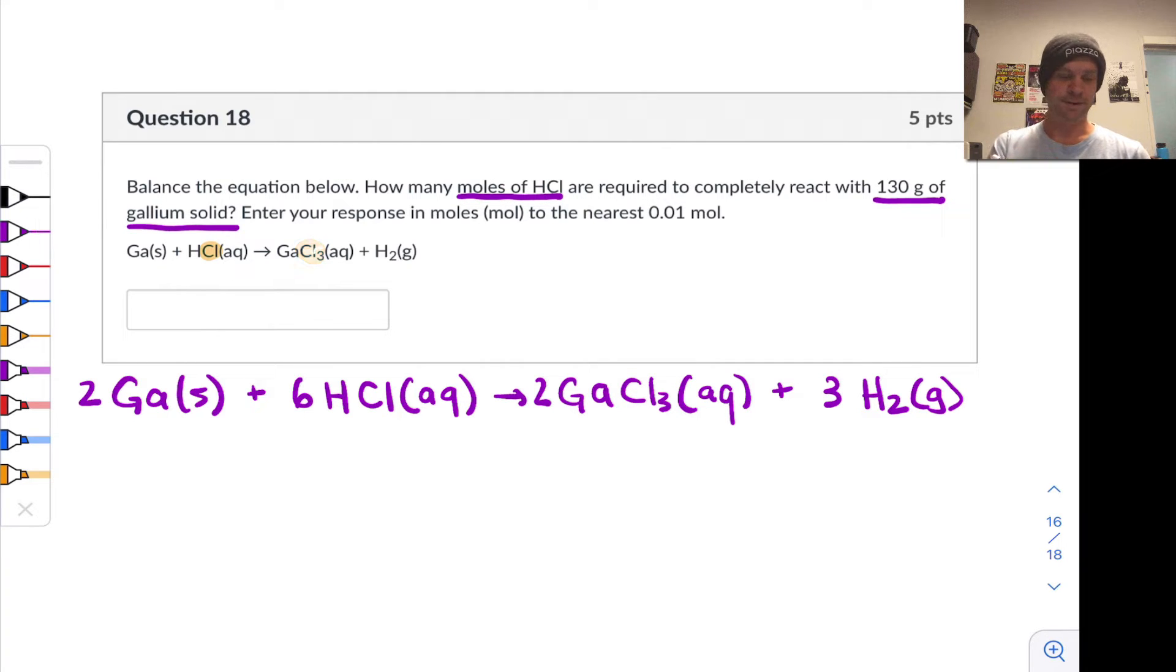So we're all balanced up now and ready to proceed to working with the actual stoichiometry. So we've got 130 grams of gallium solid. Let's map this out to figure out what we know and where we're going. We've got a mass of Ga that we're going to use as a reactant. What we want to know, ultimately, is the moles of HCl that will react completely, fully consume this given mass of gallium.